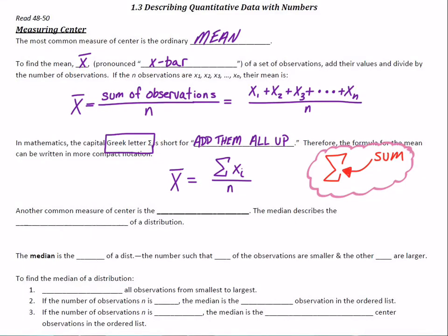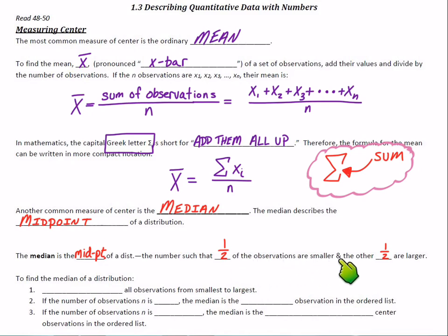The next part: another common measure of center is the median. The median describes the midpoint of a distribution, so it's definitely different than the mean, although they're both measures of center. The median is the number where half of the observations are smaller than it and the other half are larger than it — it's truly the middle observation.